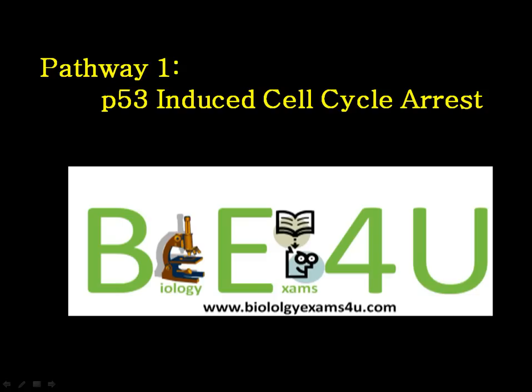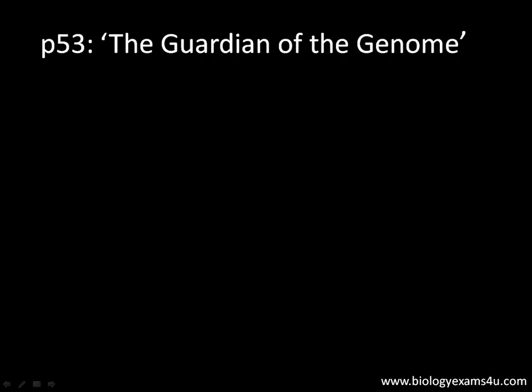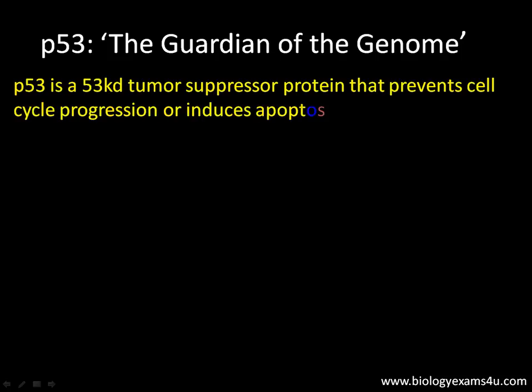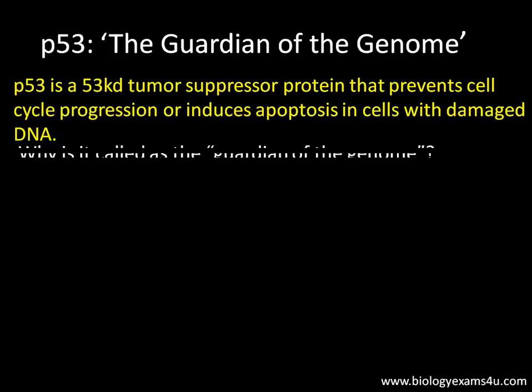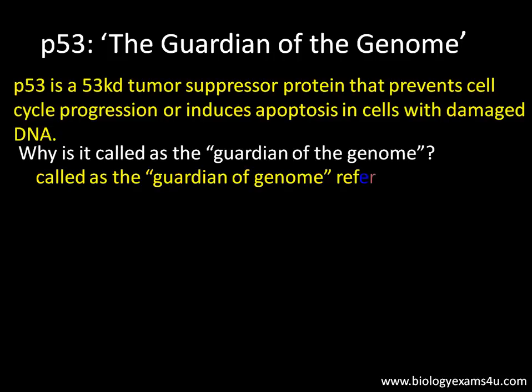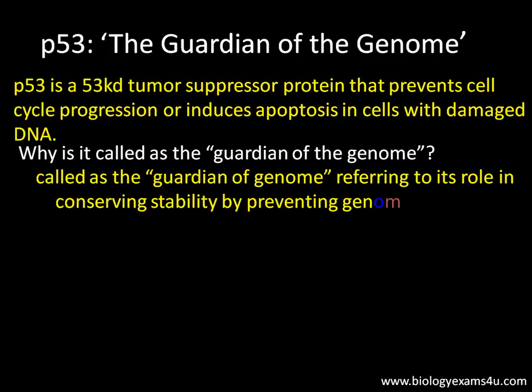Welcome to biology exams for you.com. In this tutorial we are going to discuss about the p53 gene and its role and how it induces cell cycle arrest. The p53 gene is called the guardian of the genome. It is a 53 kilodalton tumor suppressor protein that prevents cell cycle progression or induces apoptosis in cells with damaged DNA. It is called the guardian of the genome due to its role in conserving stability by preventing genome mutation.